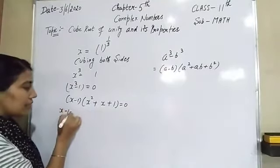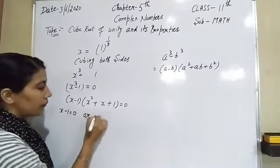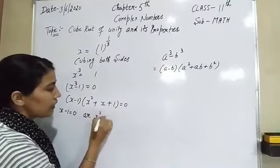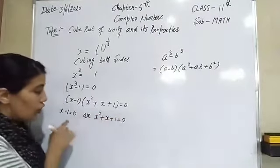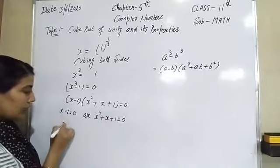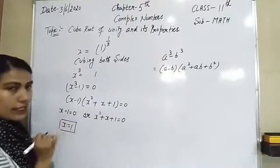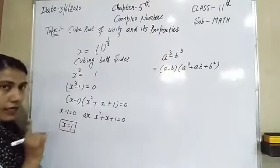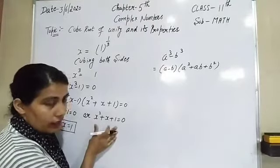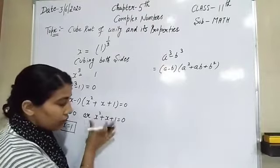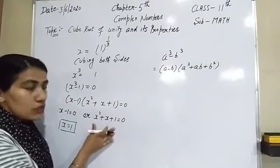That means either x minus 1 equals zero, or x² plus x plus 1 equals zero. From the first factor, x equals 1. So our first root is 1. From the second, we have a quadratic equation and we have to find its roots using the quadratic formula.